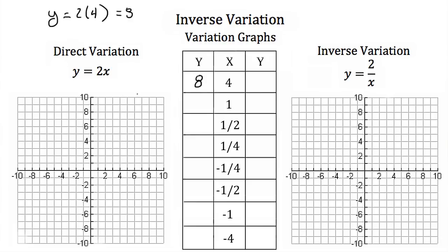Plugging in x = 1 gives y = 2. Plugging in x = 1/2 gives y = 1. Plugging in x = 1/4 gives y = 1/2. For negative values: x = -1/4 gives y = -1/2, x = -1/2 gives y = -1, x = -1 gives y = -2, and x = -4 gives y = -8.